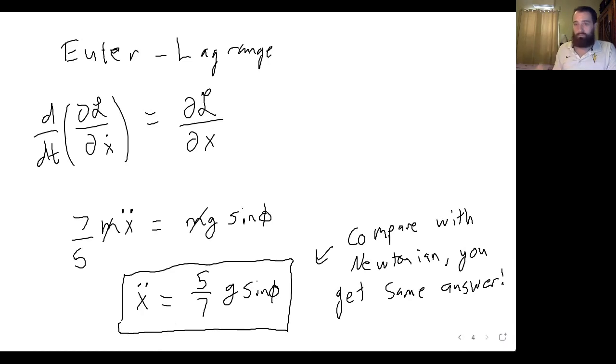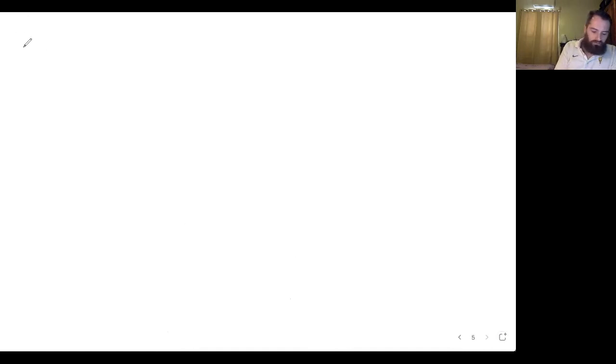So that was one way of approaching that, finding the translational acceleration, the linear acceleration. But now what about the angular acceleration? To do that, we'll start with our Lagrangian that looked like this. And now instead of solving this for x and ẋ, we'll solve it for theta and theta dot.